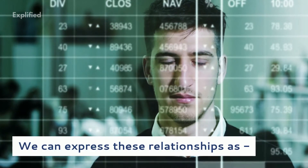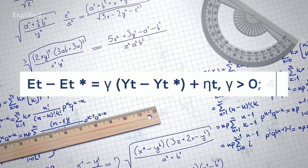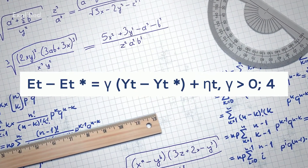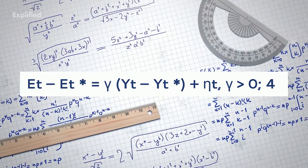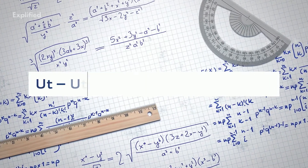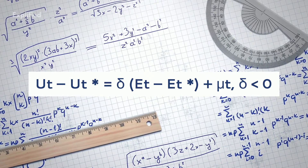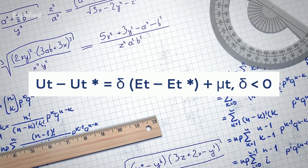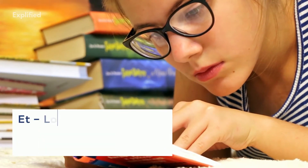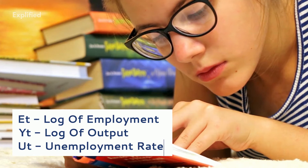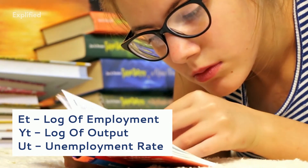We can express these relationships as: (1) et minus et-asterisk equals gamma times (yt minus yt-asterisk) plus eta-t, where gamma is less than 0; and (2) ut minus ut-asterisk equals delta times (et minus et-asterisk) plus mu-t, where delta is less than 0. Here, et is the log of employment, yt is the log of output, ut is the unemployment rate, and asterisk indicates a long-run level.